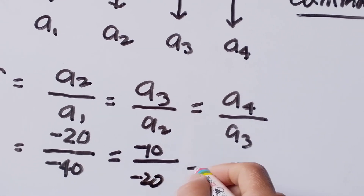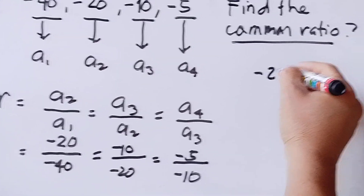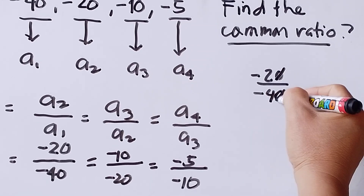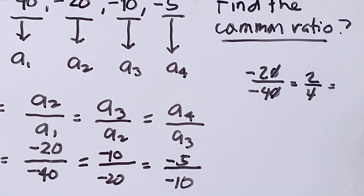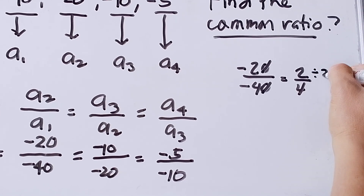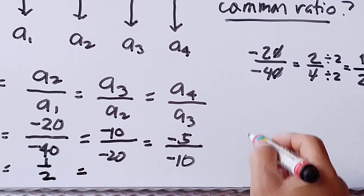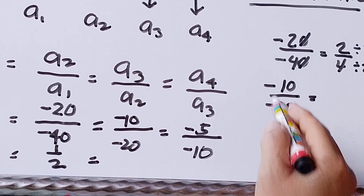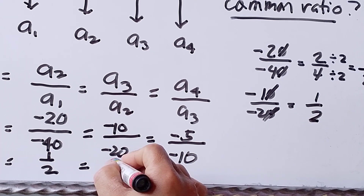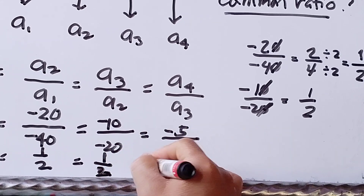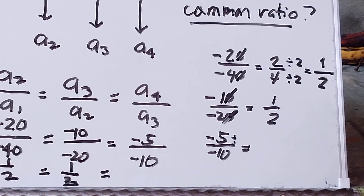Hello to my viewers. My topic today is about geometric sequence. The formula is a sub n is equal to a sub 1 times r raised to the power of n minus 1, where a sub n is the last term or the nth term, a sub 1 is the first term, r is our common ratio, and n is the number of terms.